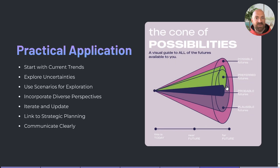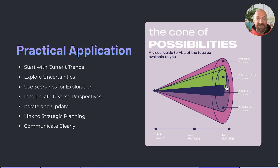So how do we apply the cone of plausibility? First, start with current trends — by analysing current trends and projecting them into the future it's possible to identify probable scenarios, which can form the basis of your cone. The second step is to explore uncertainties: identify key uncertainties and variables that could influence future outcomes. This helps in mapping out plausible and possible futures beyond the probable ones.